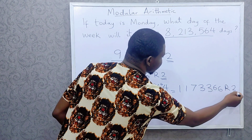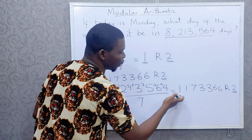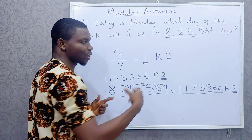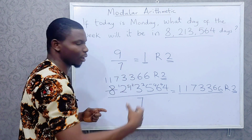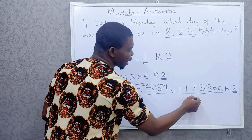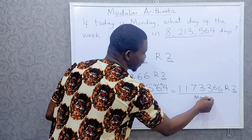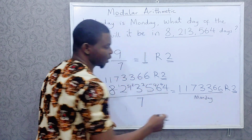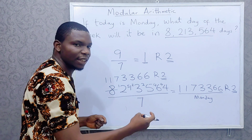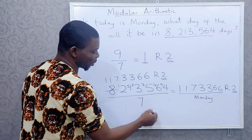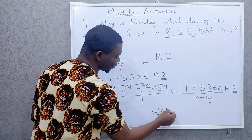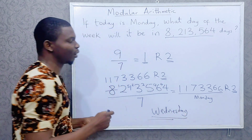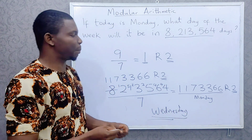So the remainder is 2. The quotient tells us the number of complete weeks — each full week brings us back to Monday. Then we count the remaining 2 days from Monday: Tuesday, Wednesday. So our answer is Wednesday.